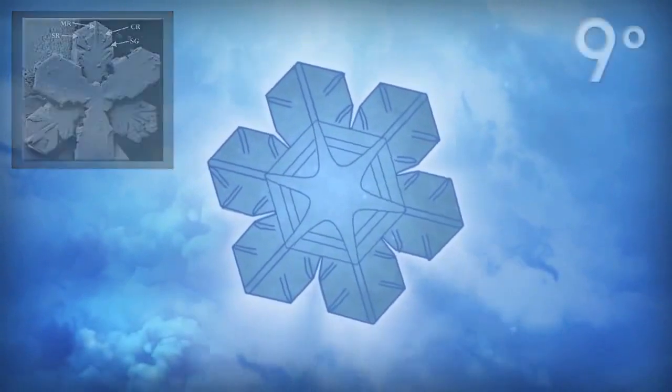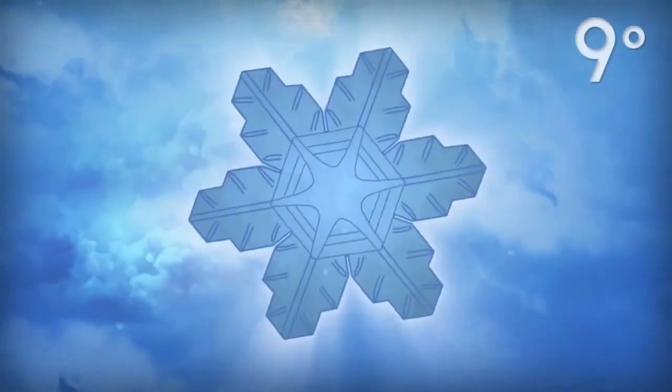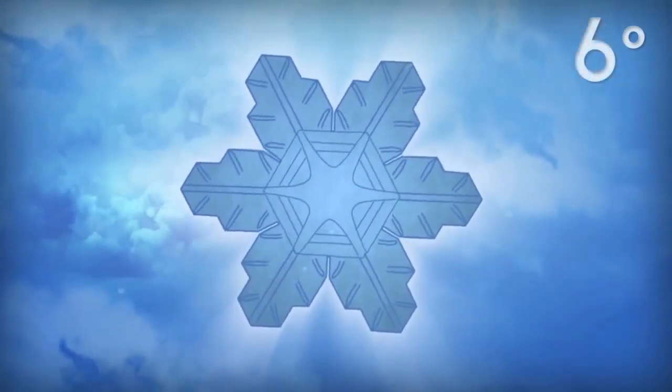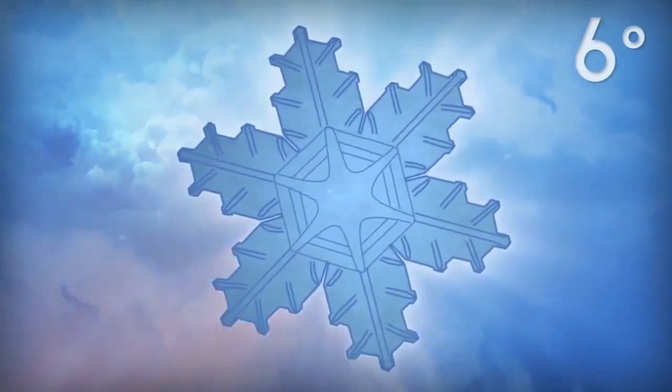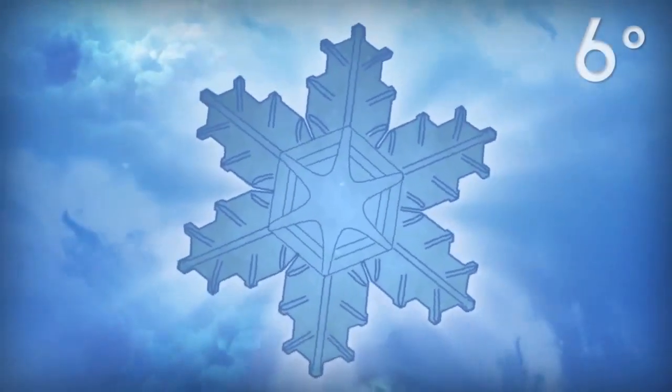When the temperature cools to nine degrees Fahrenheit, new growth at the branch tips narrow. At six degrees side branches begin to sprout. Suddenly the crystal encounters a quick blast of warmer air followed by cooler air and even more side branches sprout.